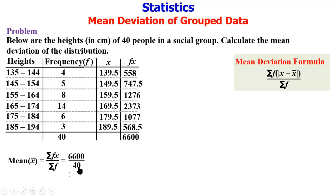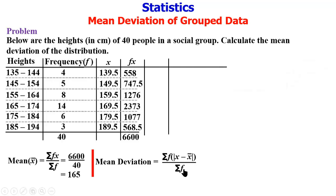Which gives the mean to be 165. We then go ahead to calculate mean deviation, which is sigma f into x minus x̄ absolute value divided by summation of f. We need more columns to accommodate this - we are getting x minus x̄, absolute value of whatever we get from here, and then the last column is the product of the frequency.